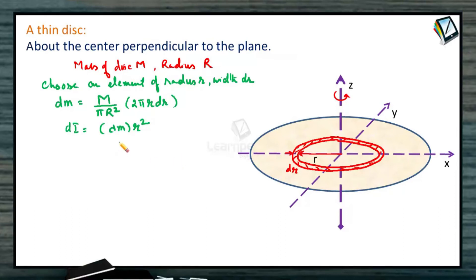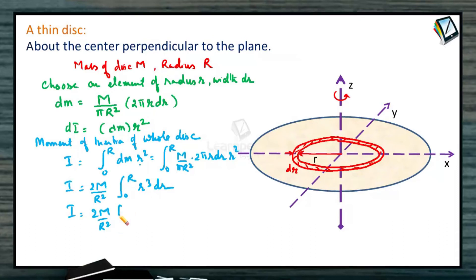Let us substitute value of dm in this. Moment of inertia of whole disk I is equal to integration r is a variable 0 to capital R, dm into r square. Or integration 0 to R, substitute the value of dm: m by pi R square into 2 pi r dr into r square. So all together I will be equal to 2m by R square taken out. Integration 0 to capital R, we are left over with r cube dr, which you will get as 2m by R square into r to the power 4 by 4, lower limit 0, upper limit R.